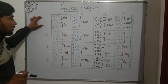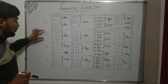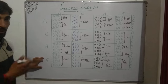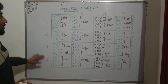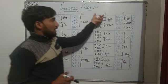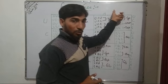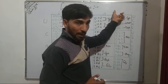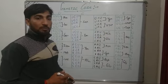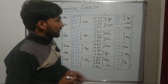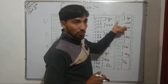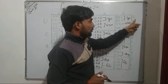For the second position we have to write U, C, A, G at the top. And for the third nitrogenous base in the triplet, we have to write in each of these boxes U, C, A, G — repeating for all four columns.